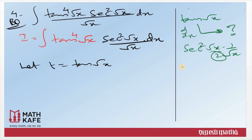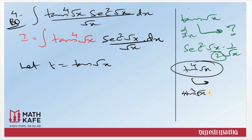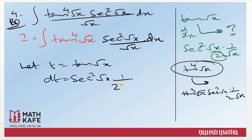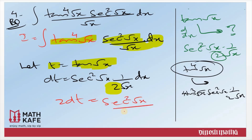Do not think about using tan⁴(√x) as the substitution — that will not help because its derivative gives 4 tan³(√x) · sec²(√x) · (1/(2√x)), and those extra terms are not present in the question. The derivative of t is dt equal to sec²(√x) · (1/(2√x)) dx. Cross multiplying: 2 dt equals sec²(√x) / √x · dx. You can clearly see you need exactly this term, 2 dt.